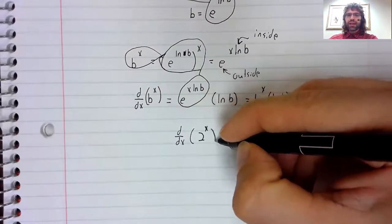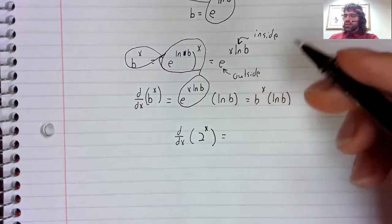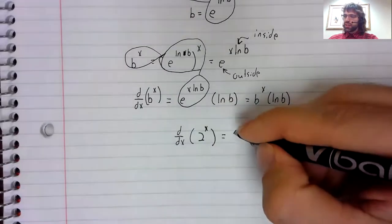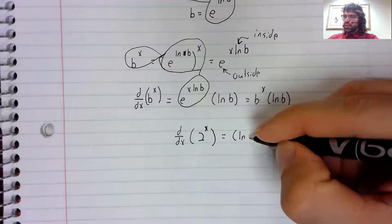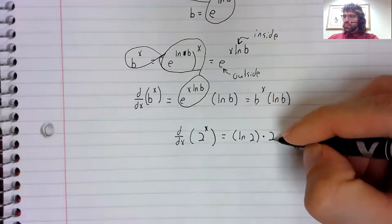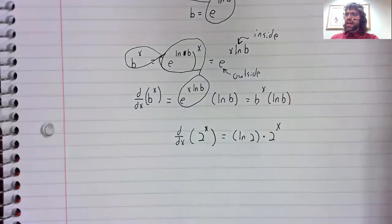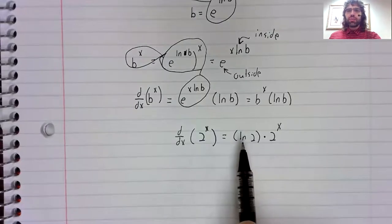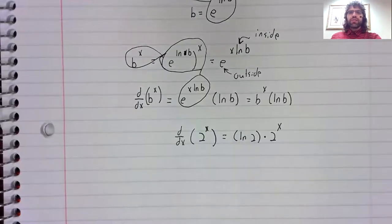two to the x. This exponential function is almost its own derivative. But we have a constant floating around as well. The derivative of two to the x is the natural log of two times two to the x.